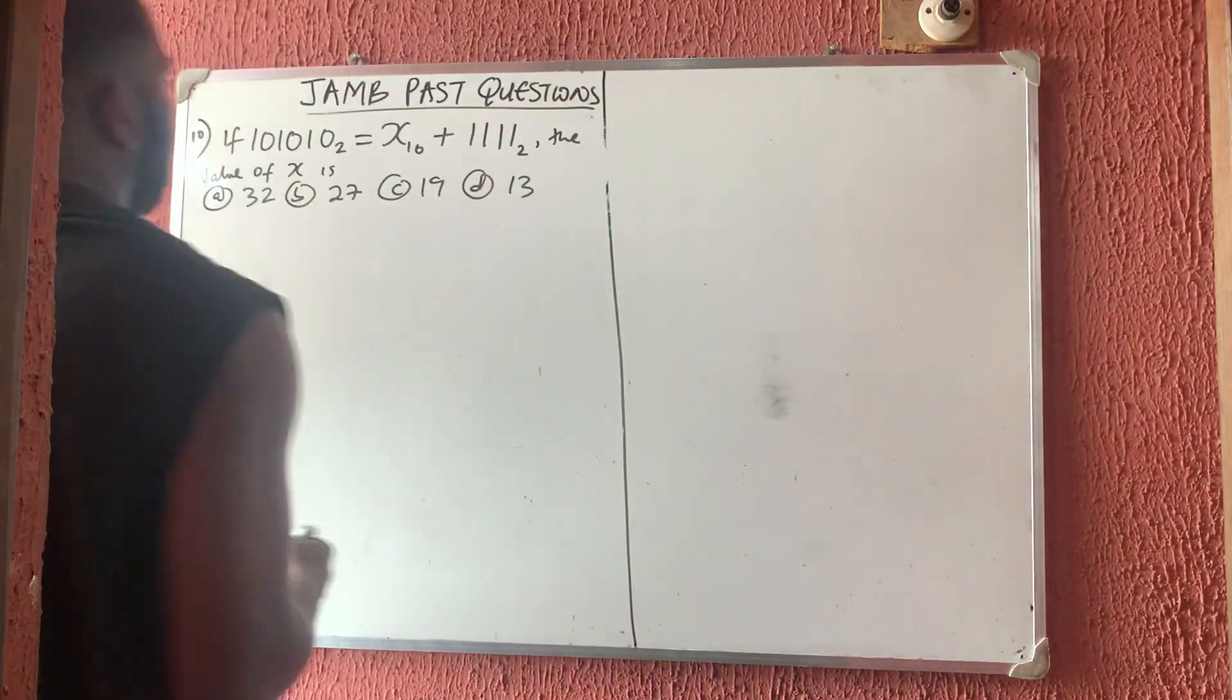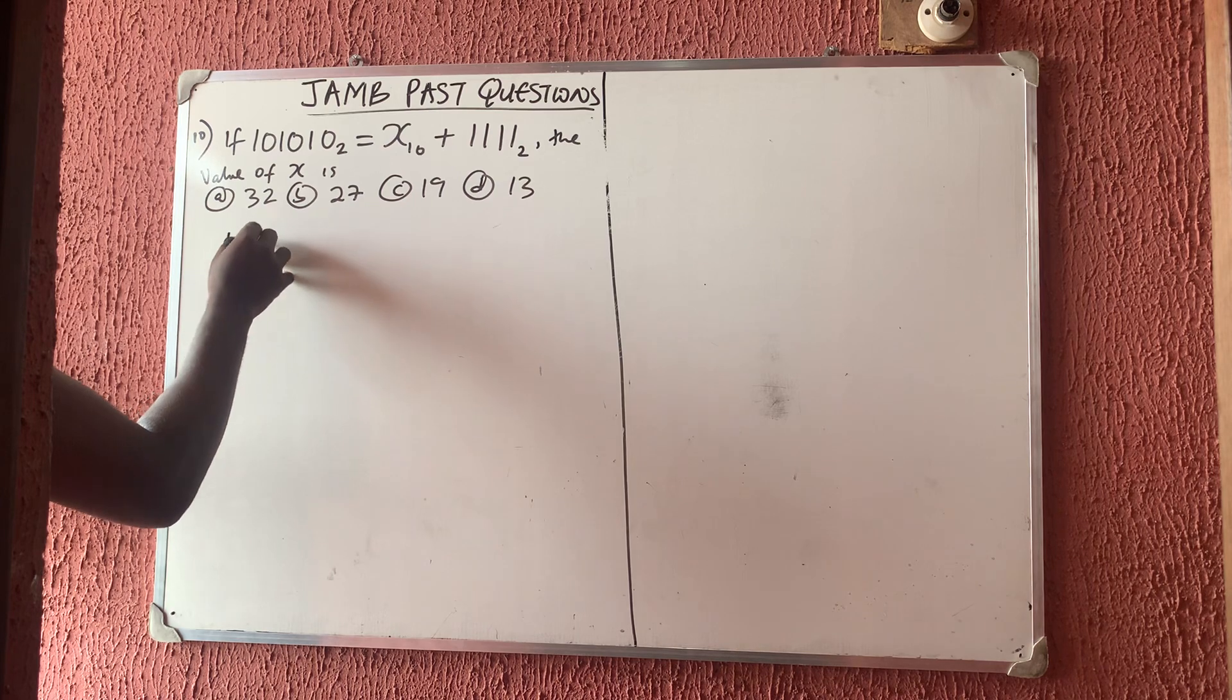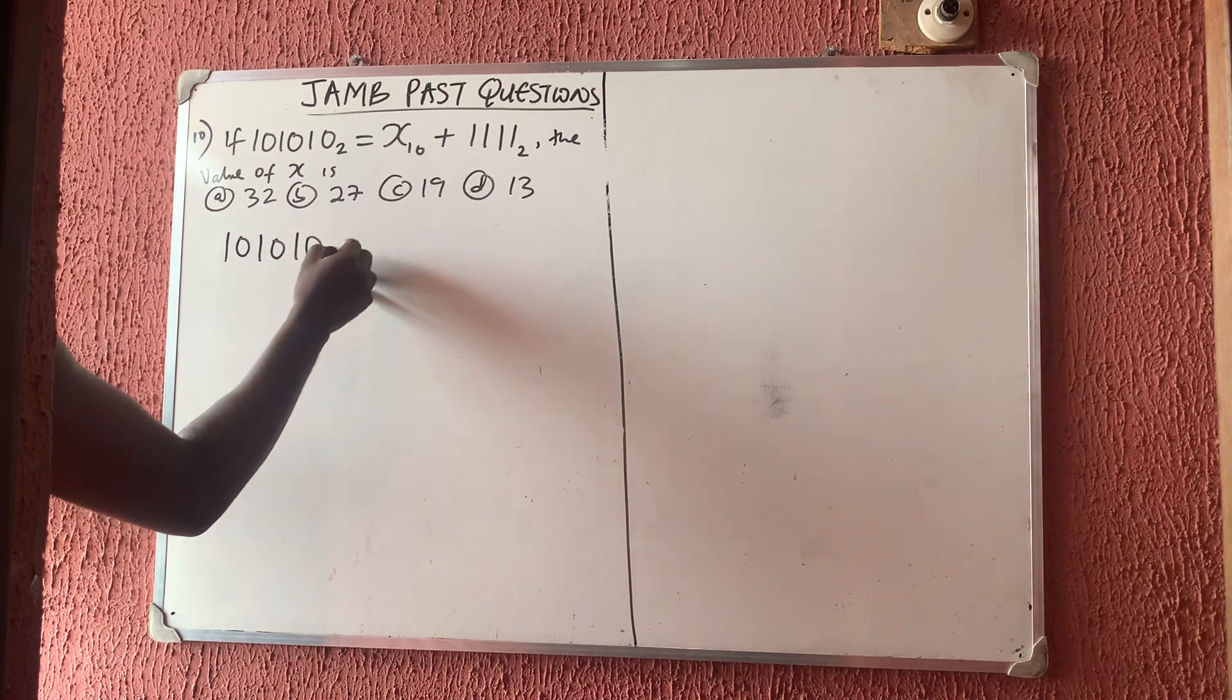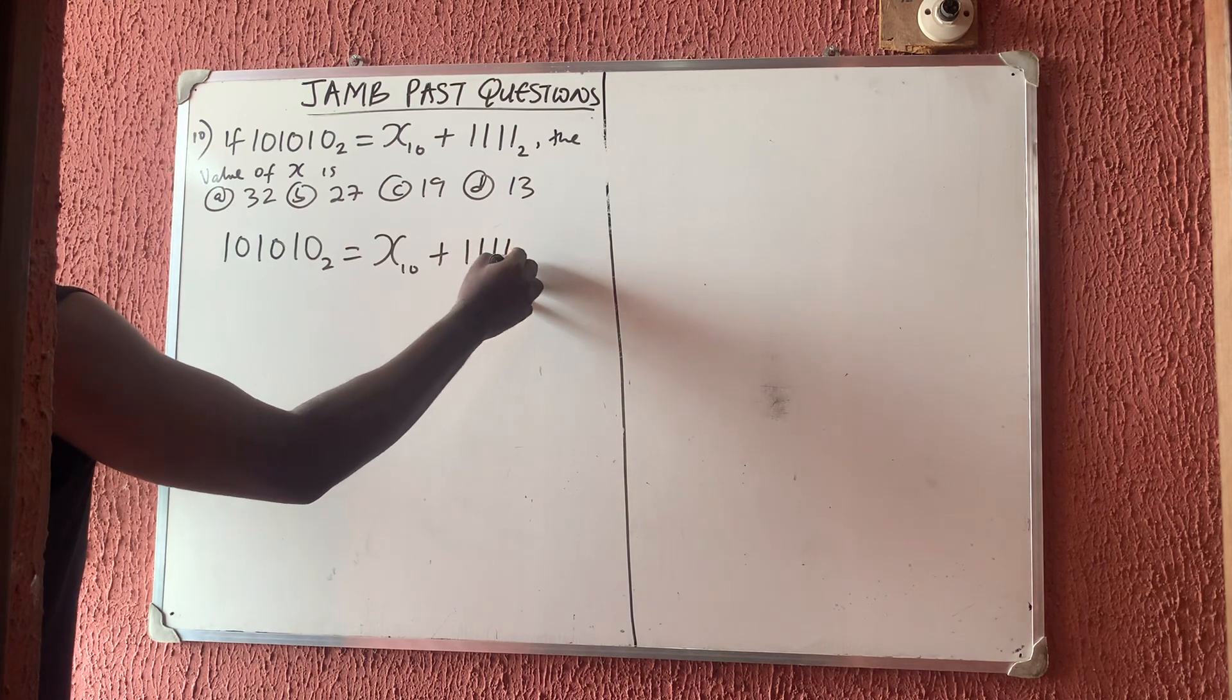Alright, let's quickly solve this. This is very simple. Now what do you do? I have 101010 base 2 is equal to X in base 10 plus 1111 in base 2.